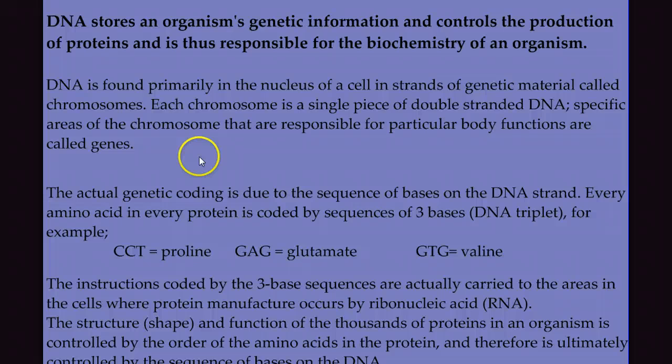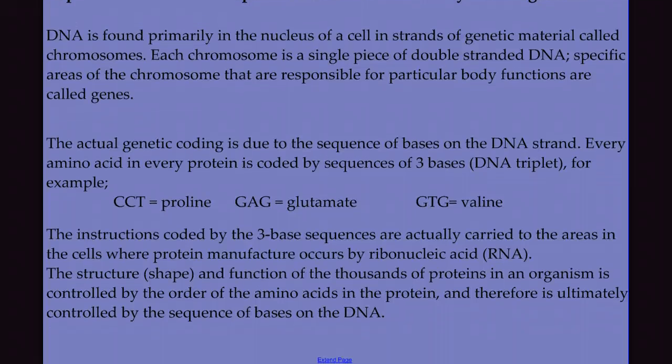Now, we know that DNA is storing an organism's genetic information. It's controlling the production of proteins and thus controls the biochemistry of an organism, because proteins are the primary components of enzymes. And we know that DNA is found in the nucleus of the cell in these strands called chromosomes, or in these molecules called chromosomes. And we just talked about the structure of that DNA. You have this page of notes in your note packet, but I'm not going to teach this now. But just to give us a heads up in terms of what we're going to be doing: